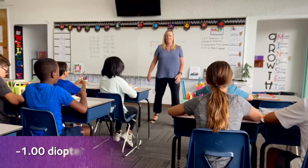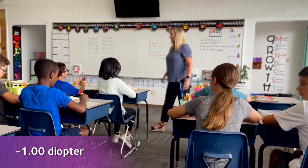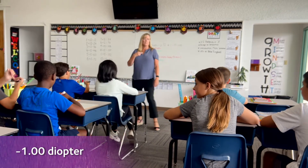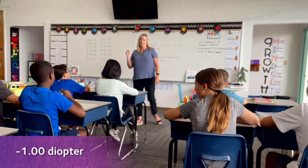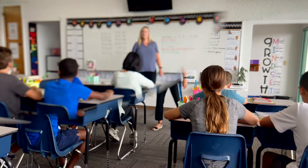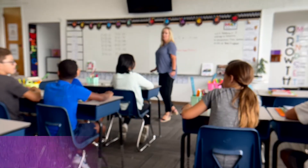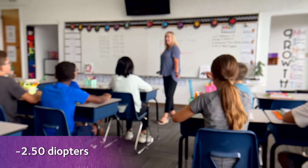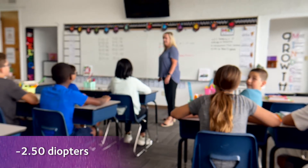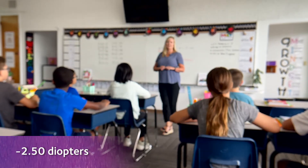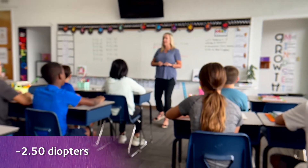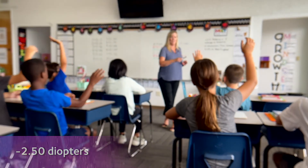Now we've adjusted our lens to simulate a child's vision at minus one diopter. Not too bad overall. The child would likely have to squint, but the whiteboard is still somewhat legible. When we make the change to minus two and a half diopters, the effects of myopia become much more noticeable. Now the whiteboard is out of focus. The child would certainly need to move closer in order to read the lessons and material written on the board.